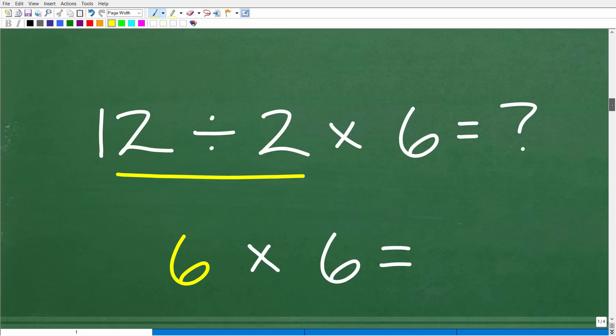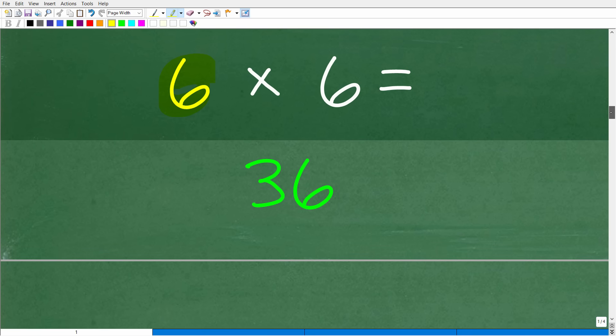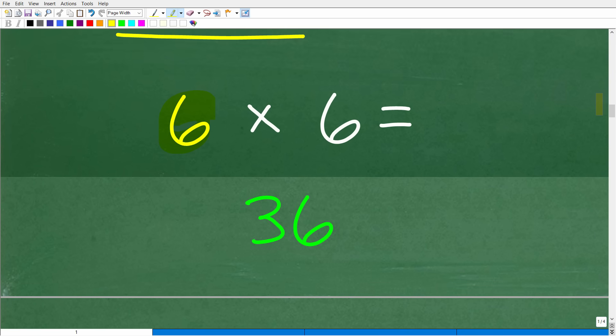Okay, so let's go ahead and finish this up because this is now pretty easy. So, now that we know that we have to do division first and not multiplication, this is just 12 divided by 2, which, of course, is 6. And then we're going to finish up with multiplication because that's the only thing we have left to do. So, 6 times 6, of course, is 36.